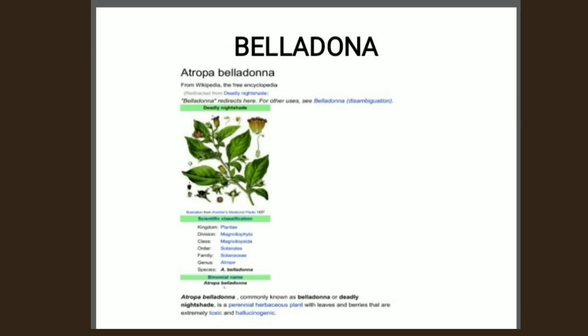The next one is belladonna herb. Belladonna herb consists of dried leaves or other aerial parts of Atropa belladonna. Its family is Solanaceae. It contains alkaloids with anticholinergic properties and is used to reduce secretions such as salivary and gastric secretions.